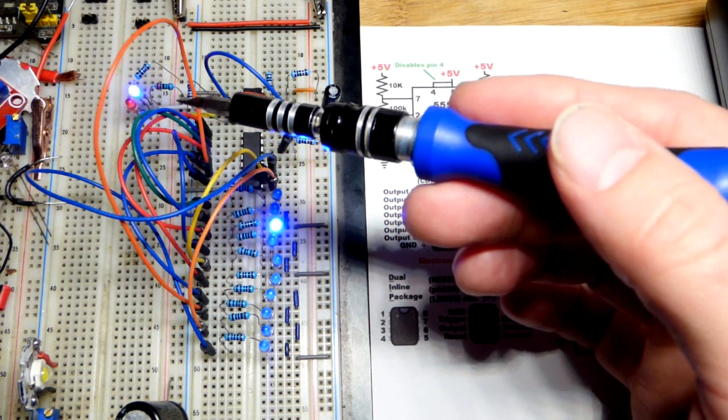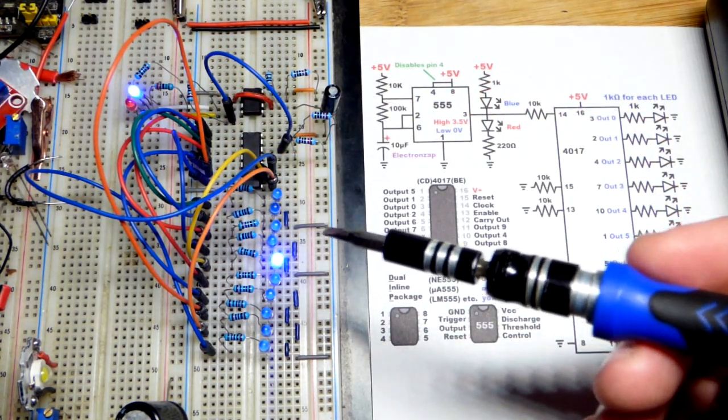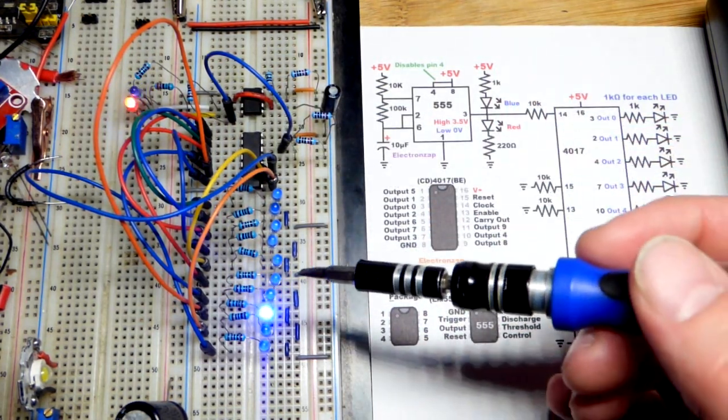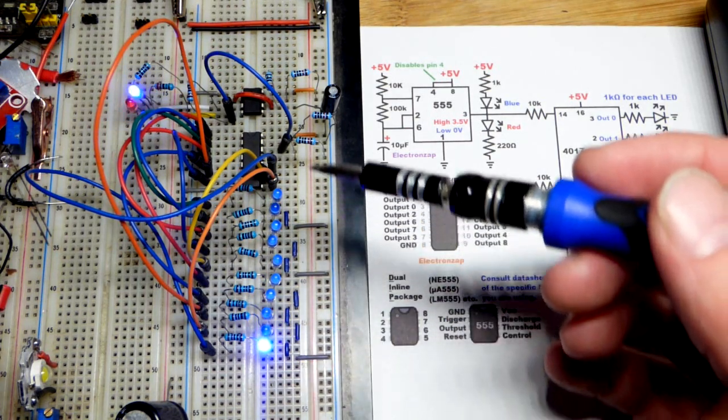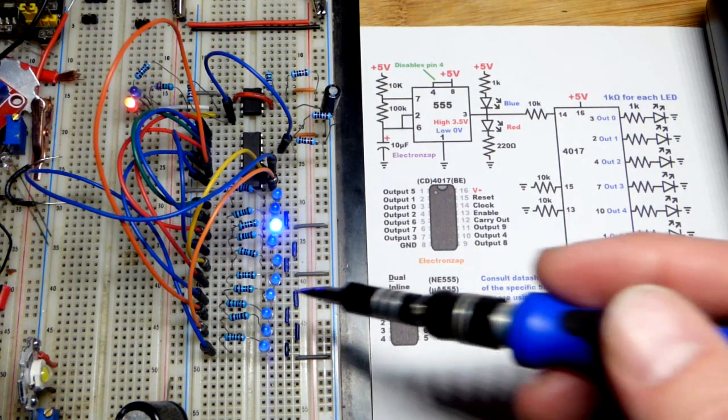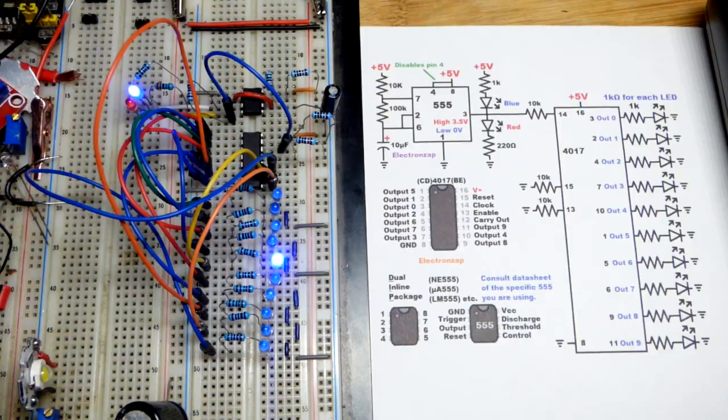Right when the output of the 555 timer goes high, you can tell by the red LED lighting up right there. Right when it goes high, that's a high input and the next LED lights up. It's chasing because it's one LED following the other that is lighting up. Once we get to the bottom here, LED 9, it jumps back to LED 0.